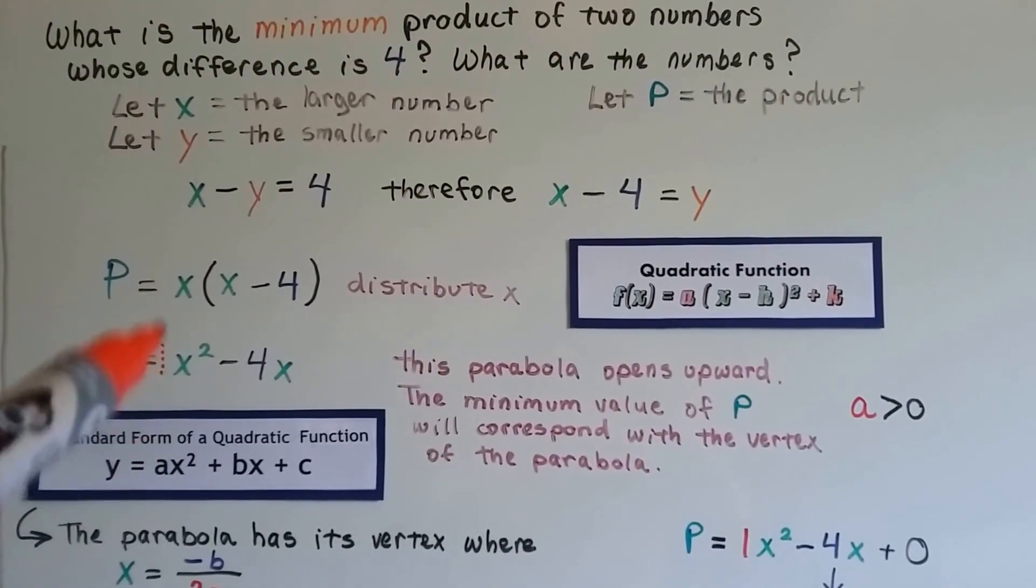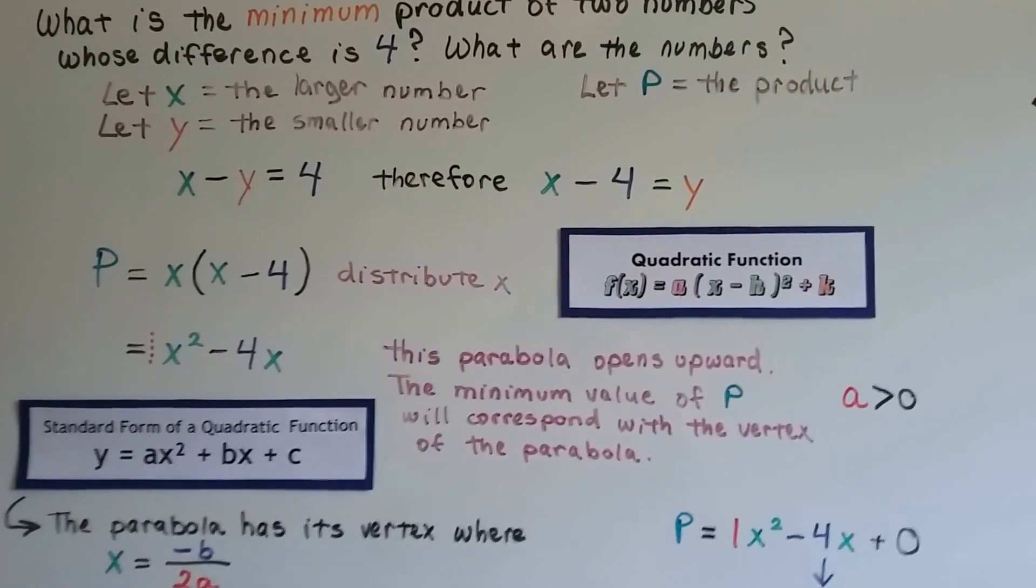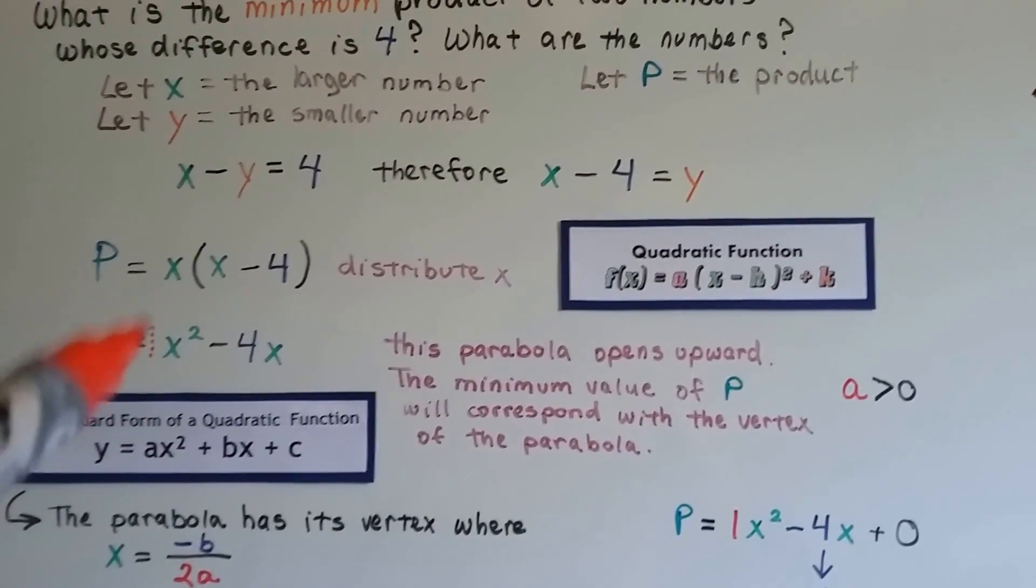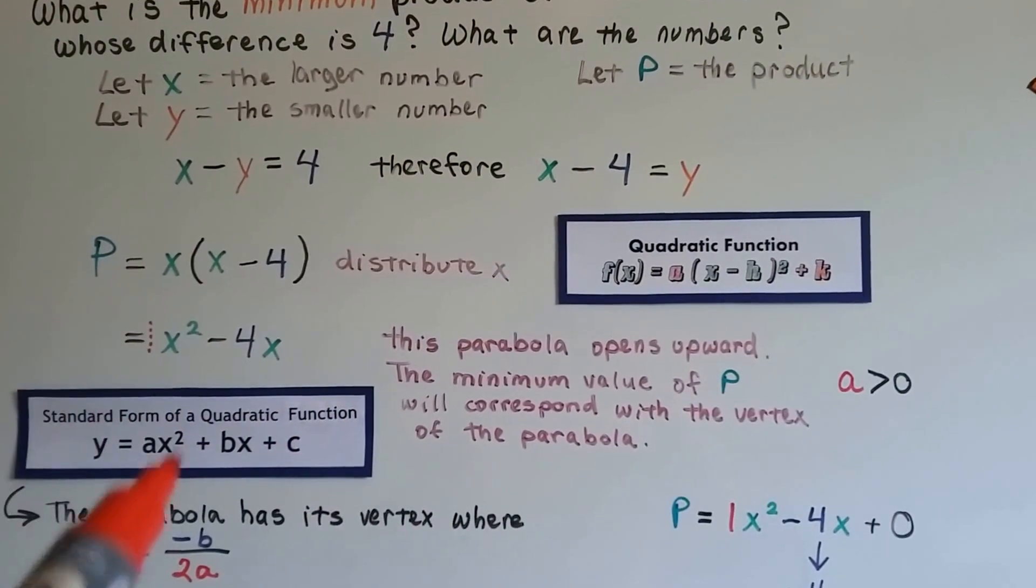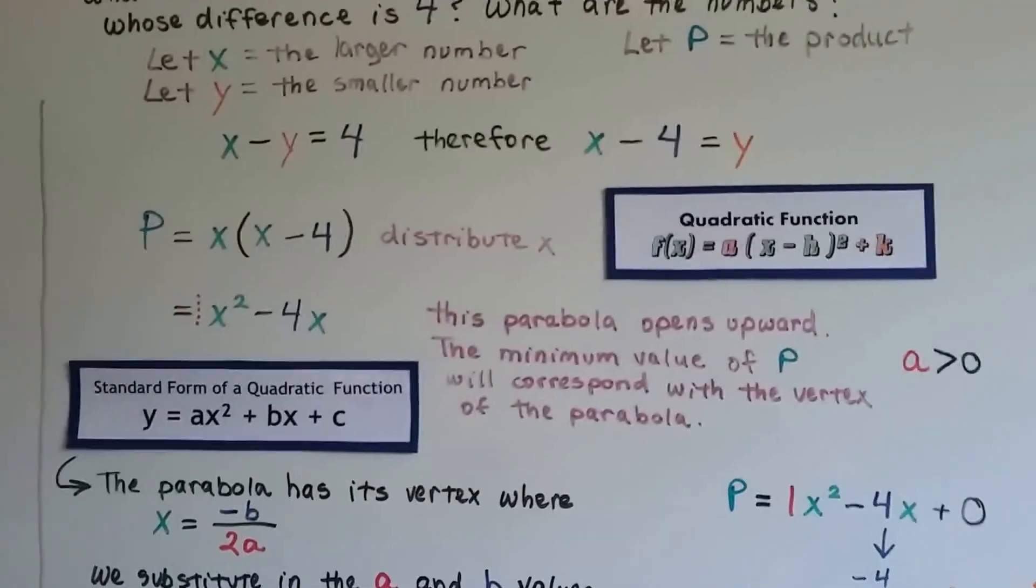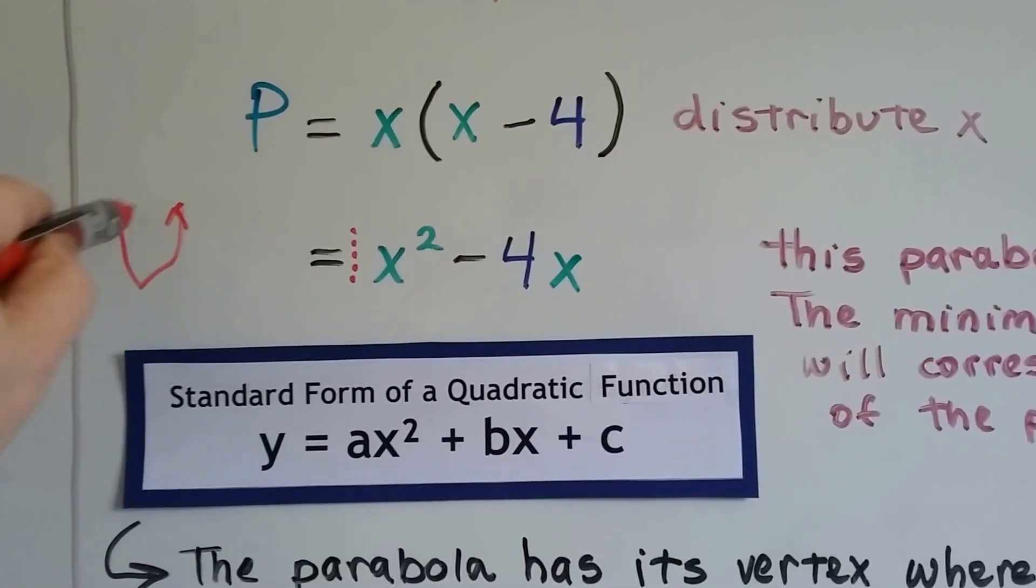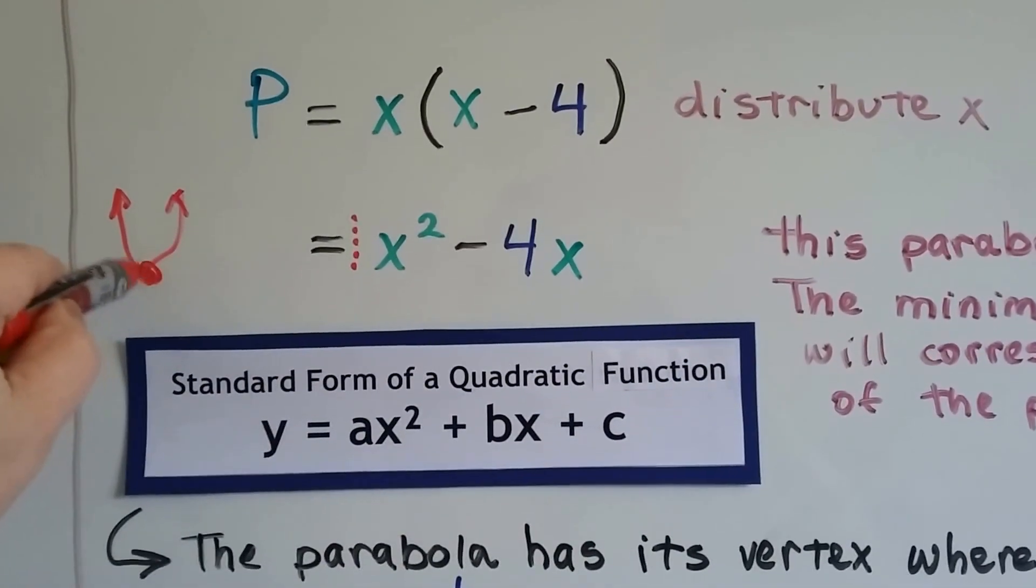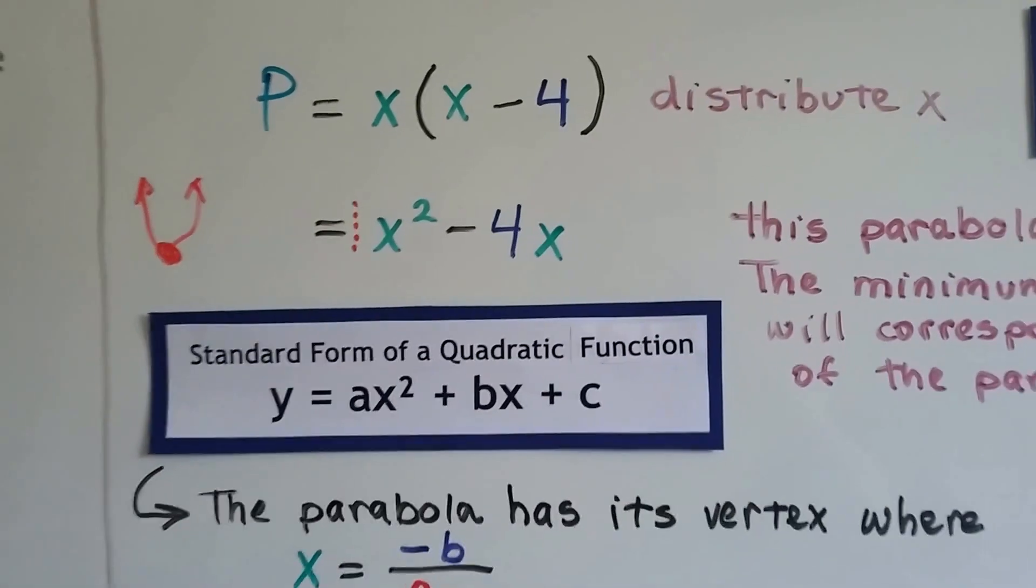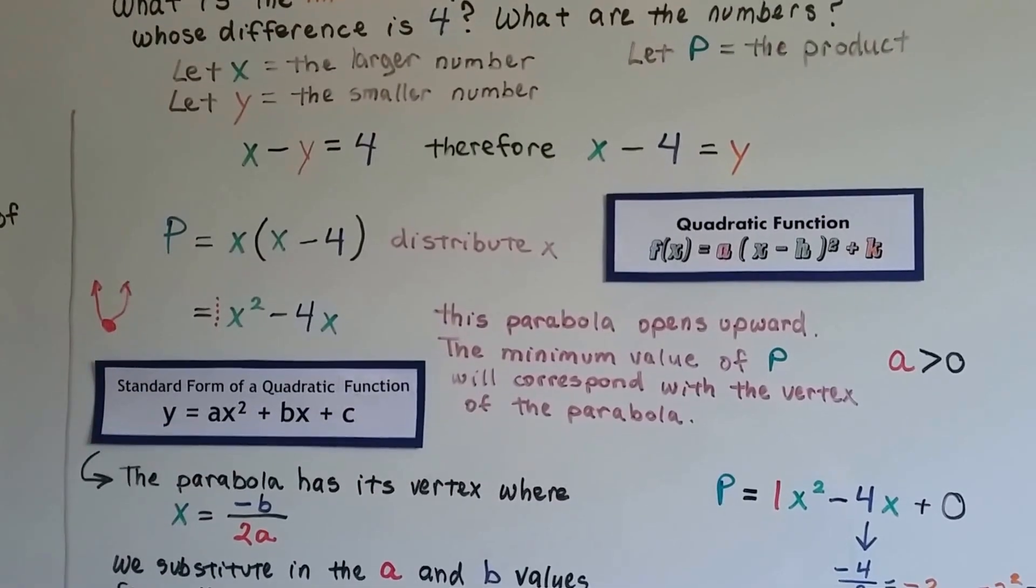There's an invisible 1 in front of that x². This parabola opens upward because of that 1. Our value for a is larger than 0, so we know our parabola is opening upward, and there's going to be a minimum value down here. That's going to be our minimum product where that vertex is.